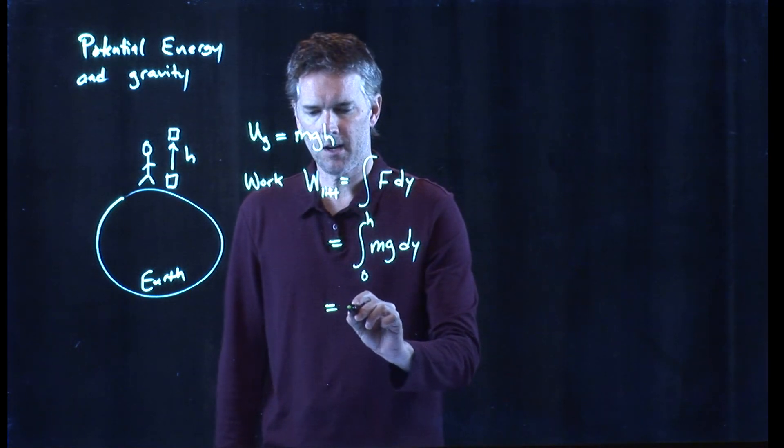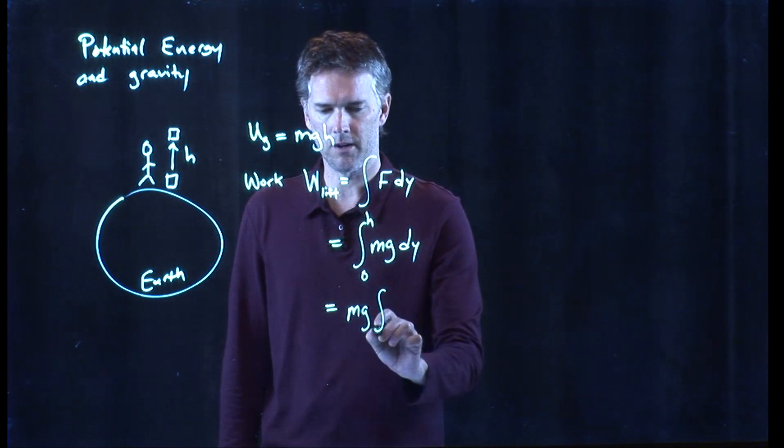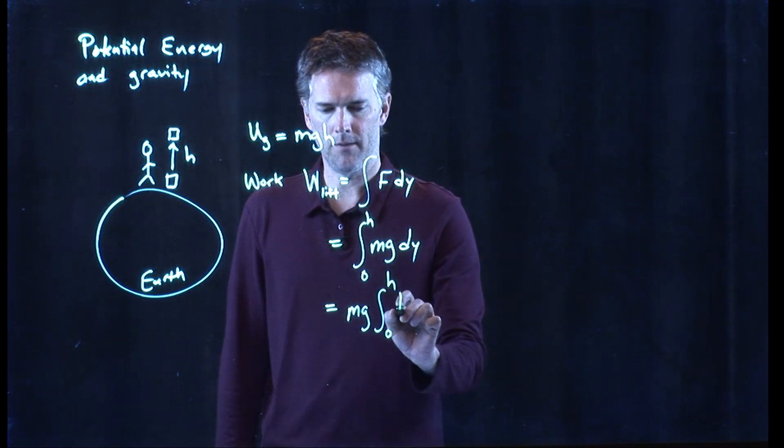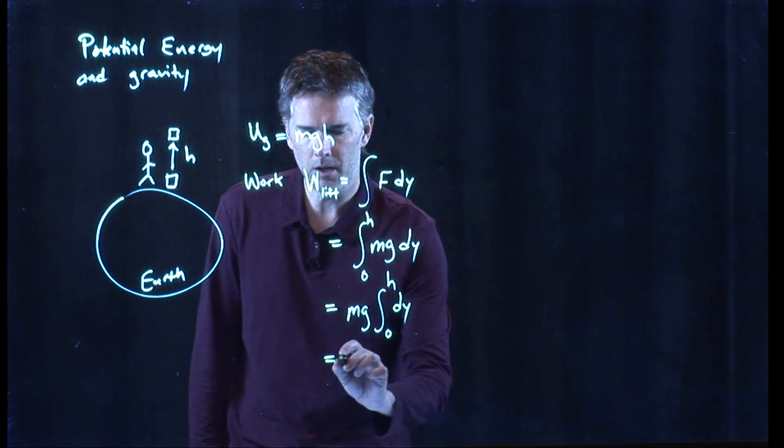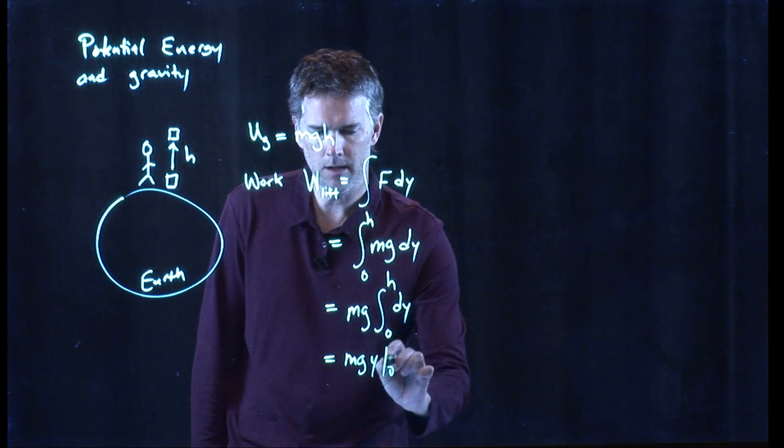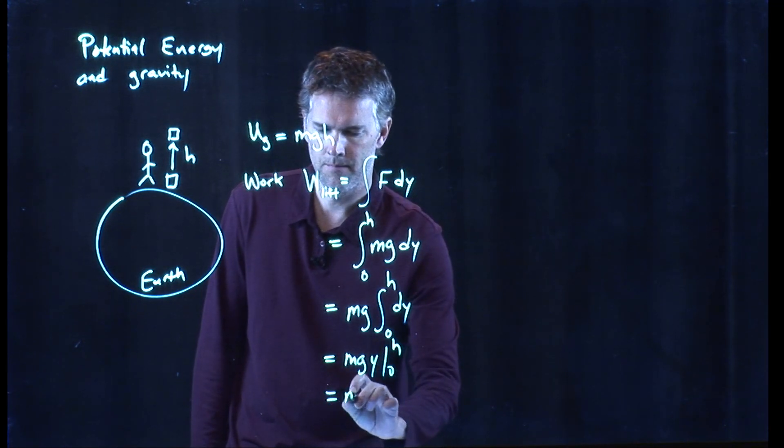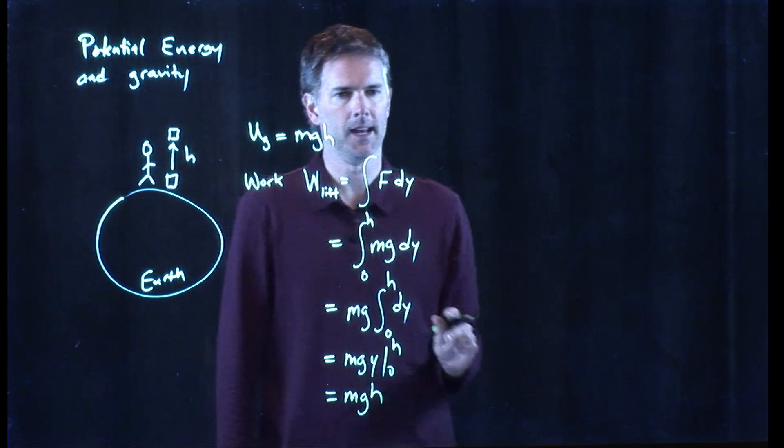But MGH is just a constant. So that comes out in front. We have the integral zero to h of dy. But that just becomes y evaluated from zero to h. And so we just get MGH.